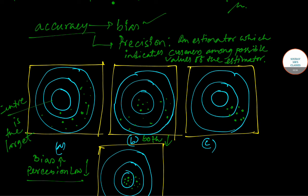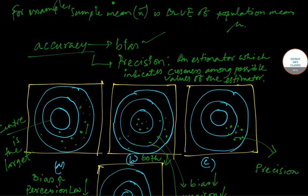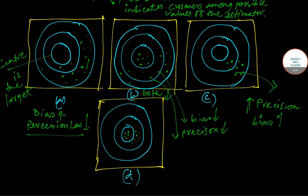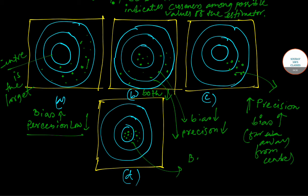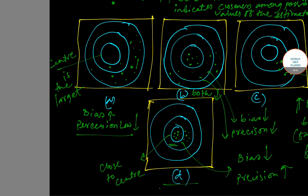In the second figure, there are some values of the estimator which are near the center, so the bias is relatively low but the precision is also low because they are far from each other. In the third case, the precision is high as they are close to each other, but the bias is very high as they are far away from the center. In the fourth case, both the bias is low and the precision is high as they are close to each other and close to the center. So this one is the most desirable one.